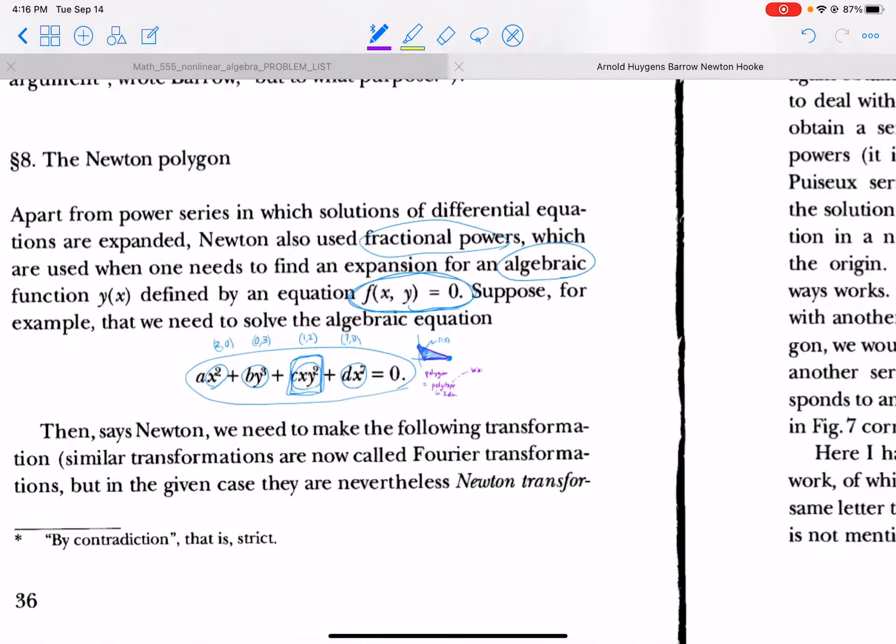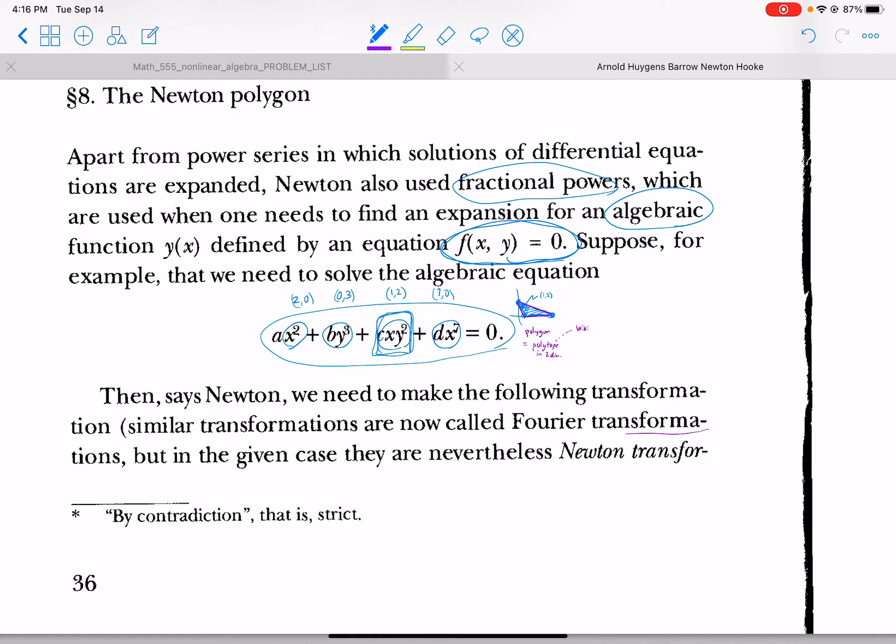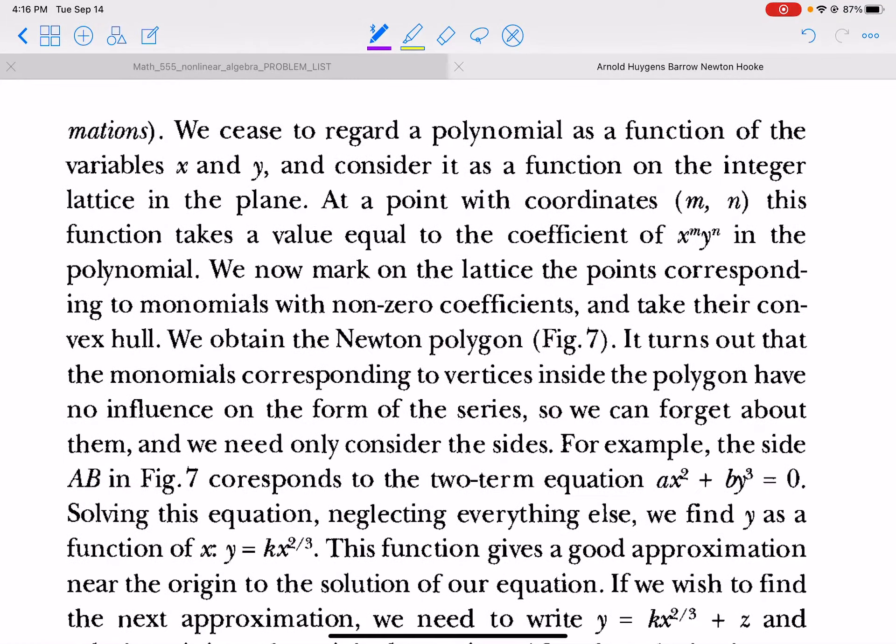Okay, so then it says Newton, we need to make the following transformation. Similar transformations are now called Fourier transformations, but in the given case they are nevertheless Newton transformations. We cease to regard a polynomial as a function of the variables x and y and consider it as a function on the integer lattice in the plane. This is a very interesting thing. Take some time, like pause the video, think about this statement. Yeah, okay, welcome back from your pausing of the video. At a point with coordinates m,n, this function takes a value equal to the coefficient of x to the m, y to the n in the polynomial.